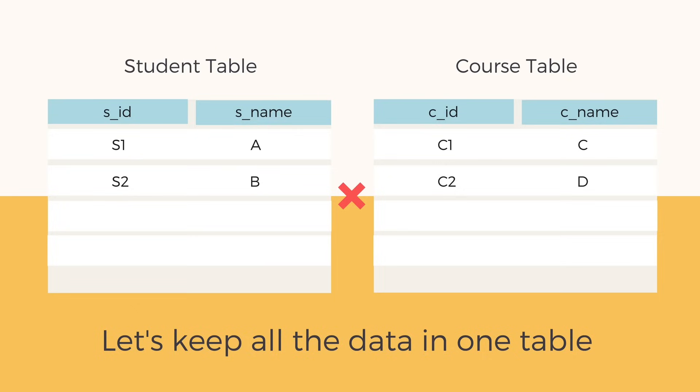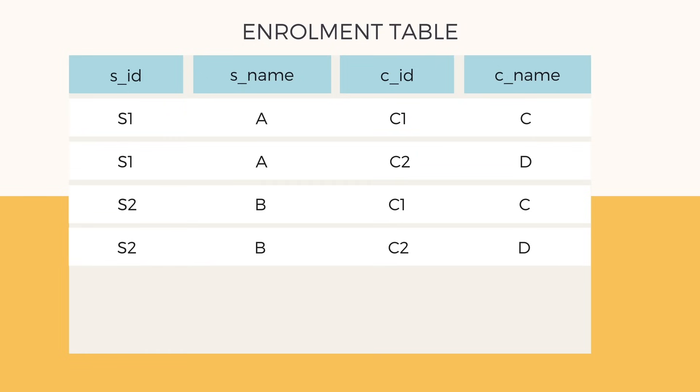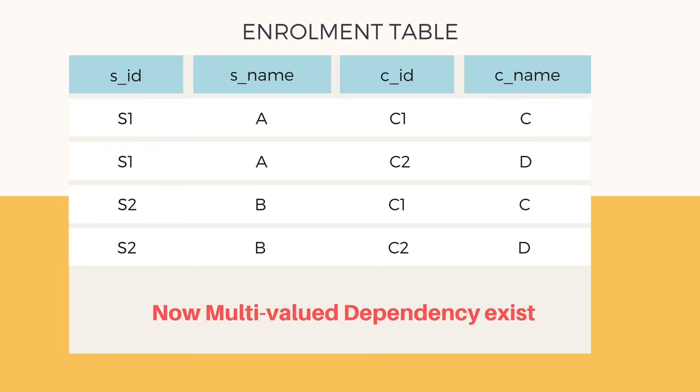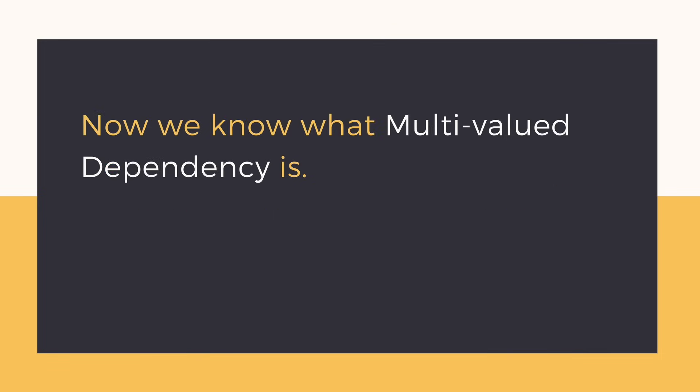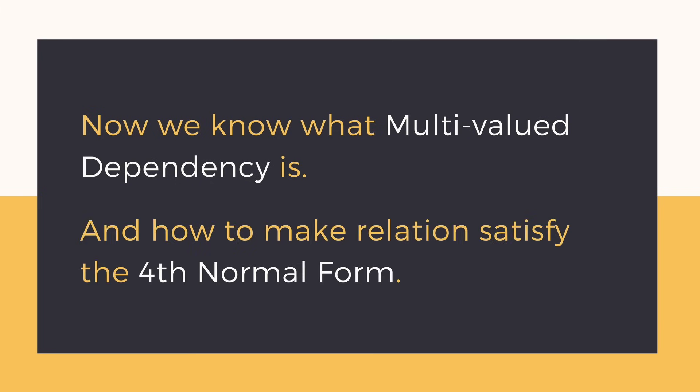If we do a Cartesian product of the tables and try to keep data in a single table it will look like this, and clearly we have multi-valued dependency in this situation. So design your database carefully, and with this we now know what multi-valued dependency is and how to make a relation satisfy the fourth normal form.